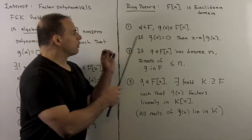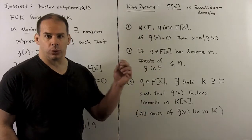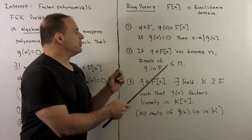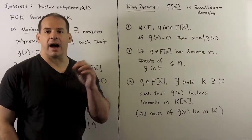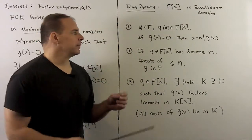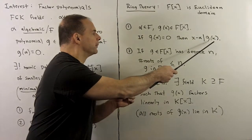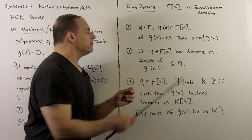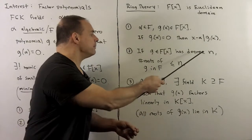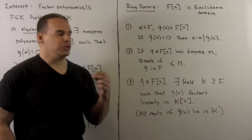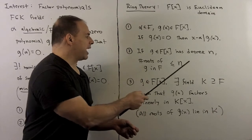For results on roots, first we have divisibility in terms of roots. If I have g a polynomial with coefficients in f, and alpha in f is a root of g, then x minus alpha divides g(x). With that, if we have a polynomial g with coefficients in f of degree n, the number of roots of g in f, counted with multiplicity, is less than or equal to n.